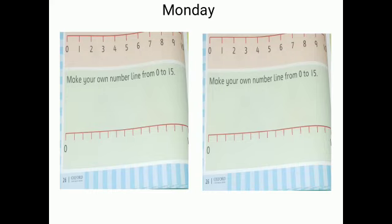A number line is a straight line that is divided into parts and can be divided in many ways. Number lines can also be used when adding and subtracting. A number line is usually represented horizontally.